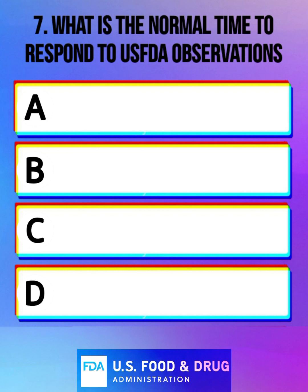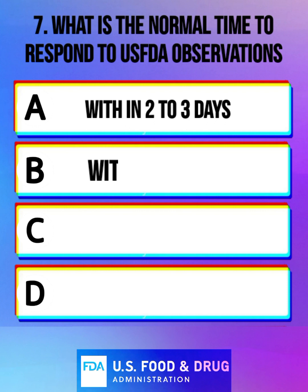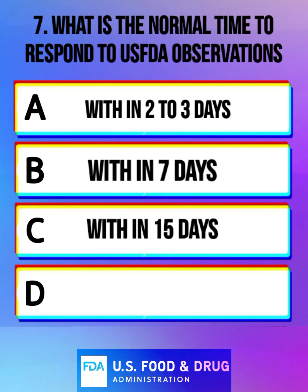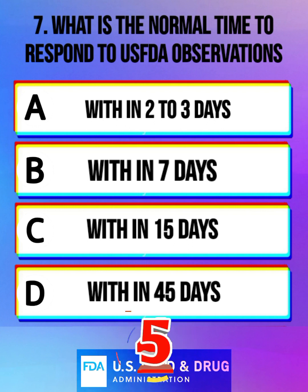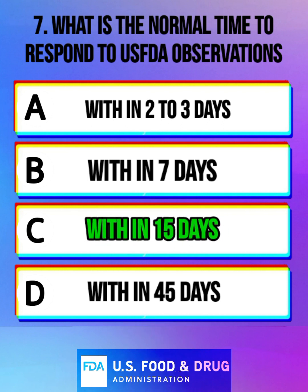What is the normal time to respond to USFDA observations? Option A: within 2 to 3 days. Option B: within 7 days. Option C: within 15 days. Option D: within 45 days. And the correct answer is within 15 days.